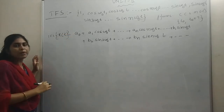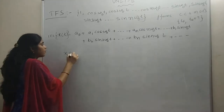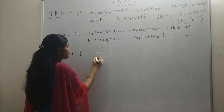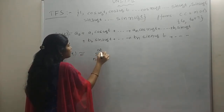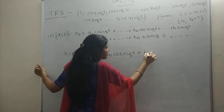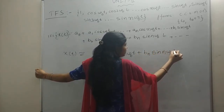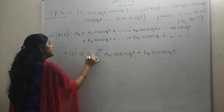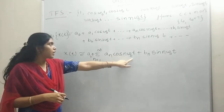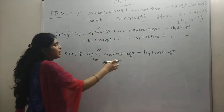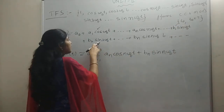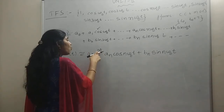The trigonometric Fourier series representation of signal x(t) is an approximation — not an exact representation. In compact summation form: x(t) = a₀ plus summation from n=1 to infinity of aₙ·cos(nω₀t) plus bₙ·sin(nω₀t). Substituting n=1 gives a₁·cos(ω₀t) plus b₁·sin(ω₀t); for n=2, a₂·cos(2ω₀t) plus b₂·sin(2ω₀t). So n varies from 1 to infinity with infinite terms.